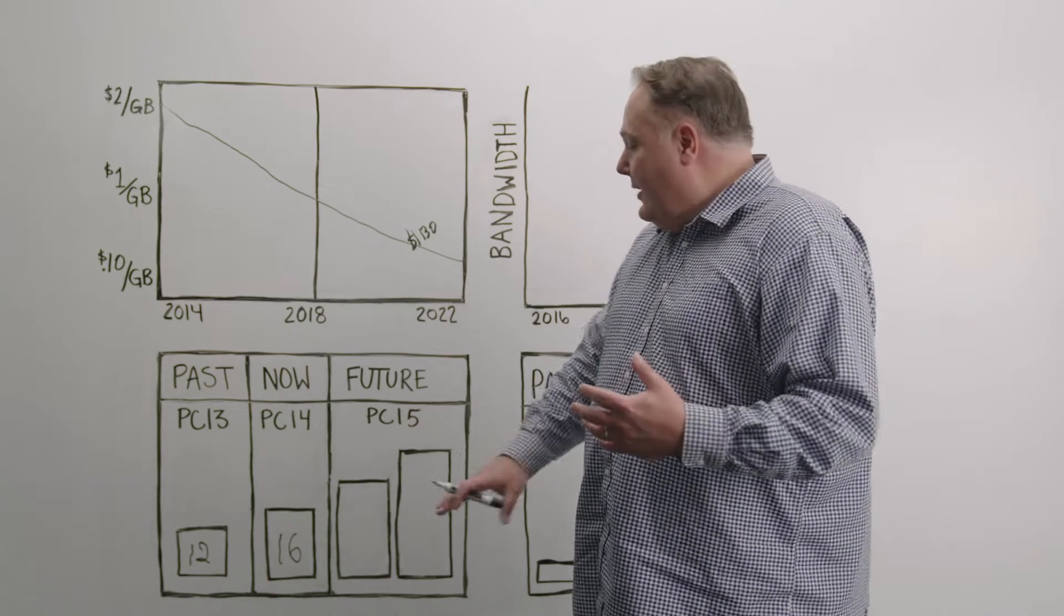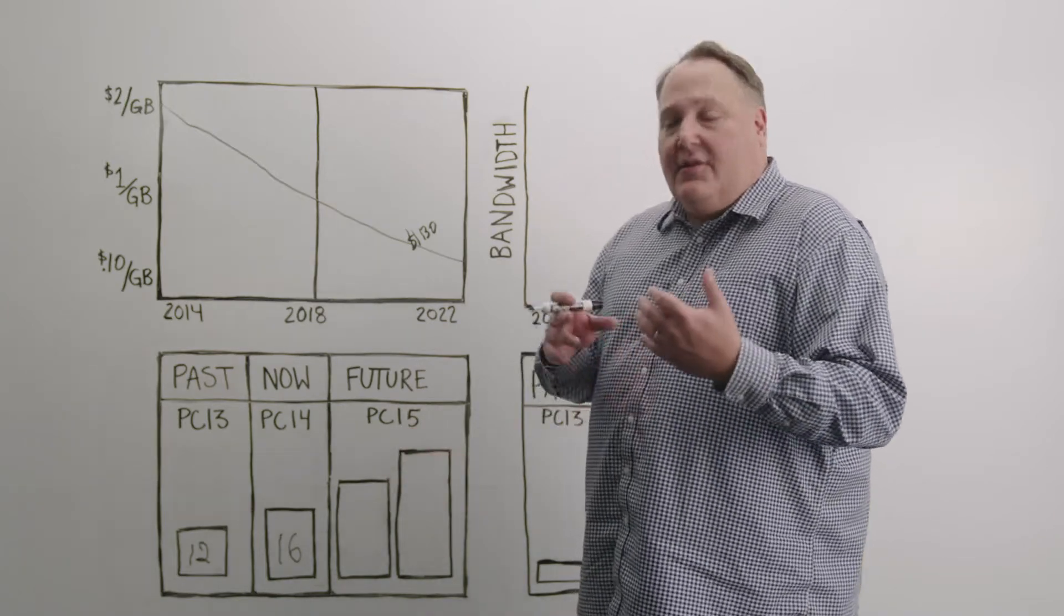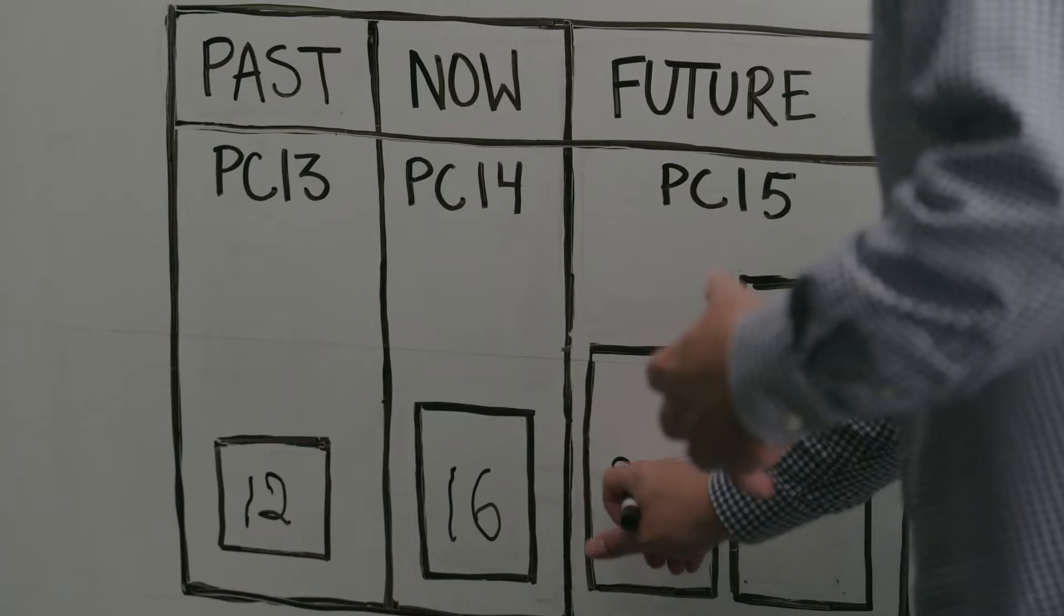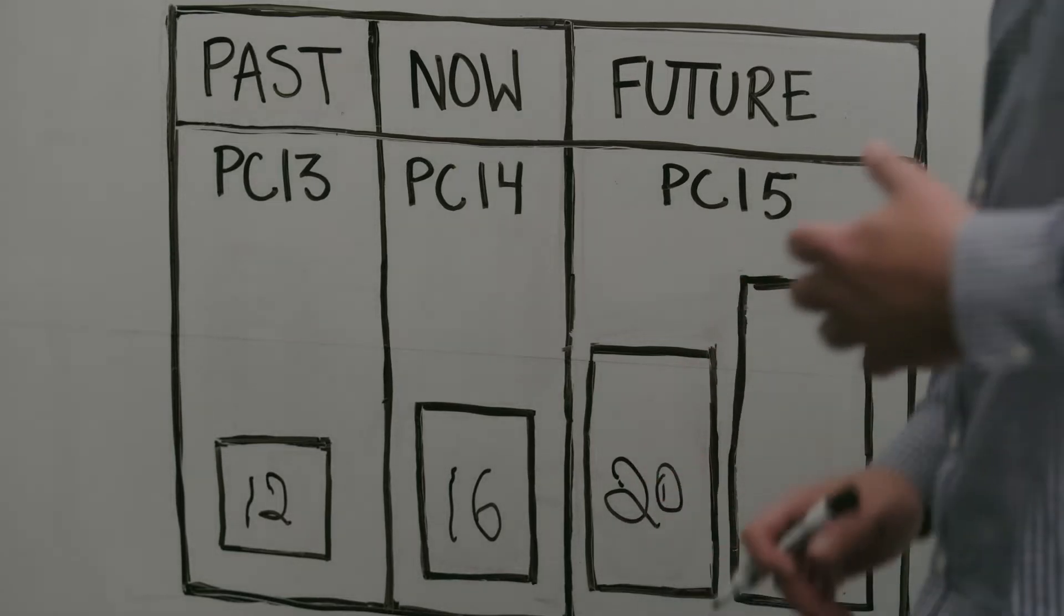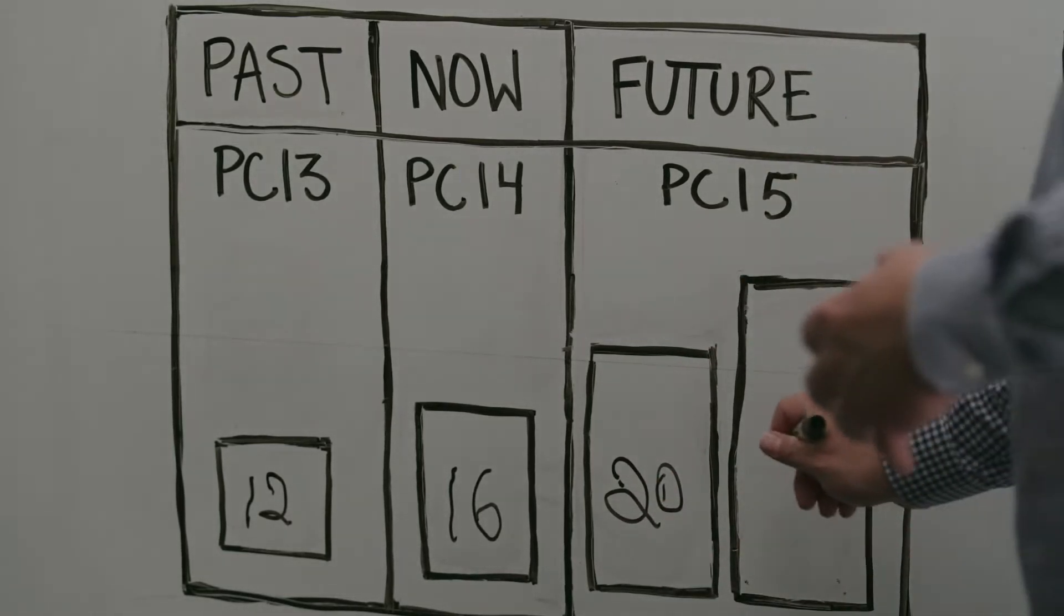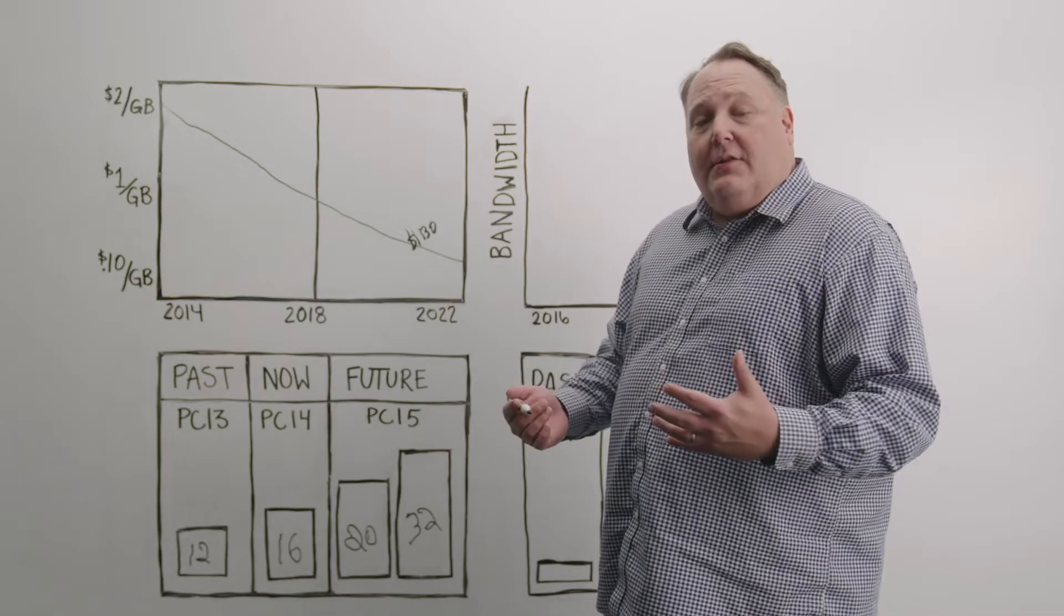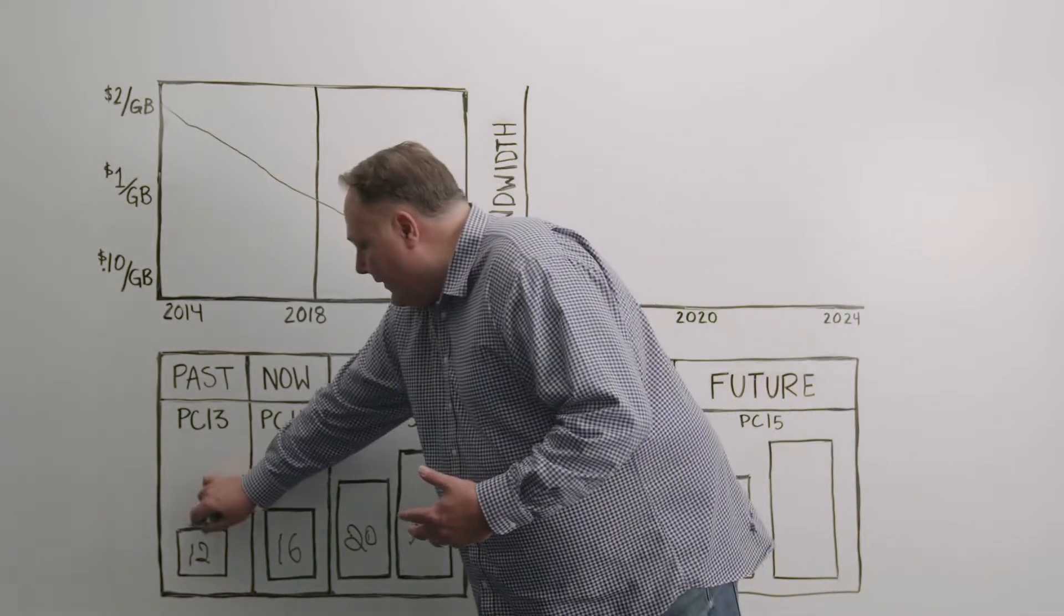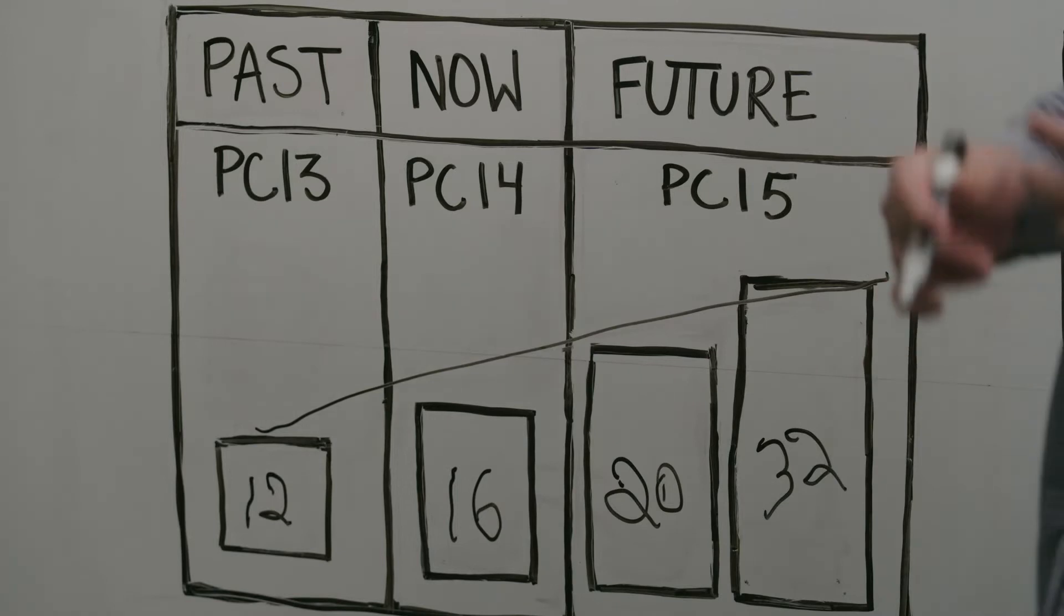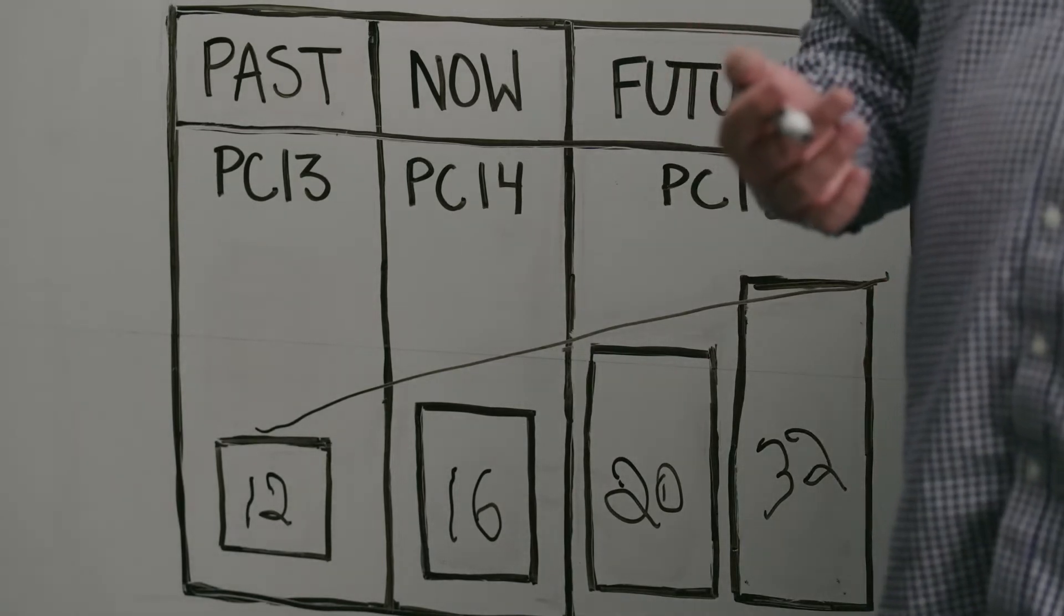And with Sapphire Rapids and PCI 5, this is moving to 20 drives on an Intel platform and 32 drives on an AMD platform. The net result is a 300% increase over time in terms of the number of drives that you can put on the platform.